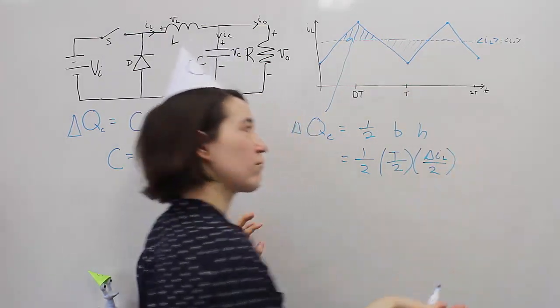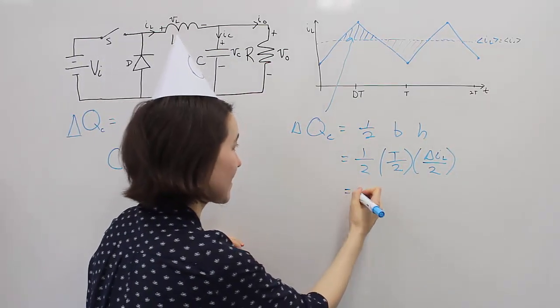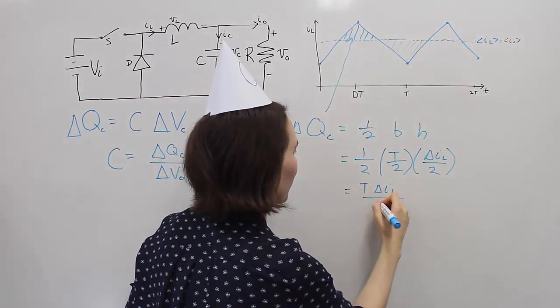Then we want half of that, so one half. So we have these simple equations. Let's simplify this, and we'll get T delta IL over 8.